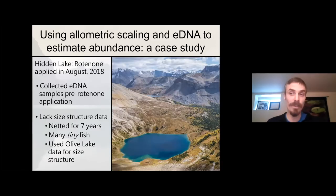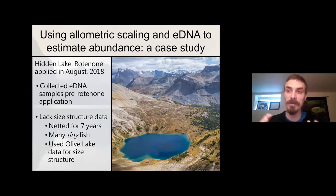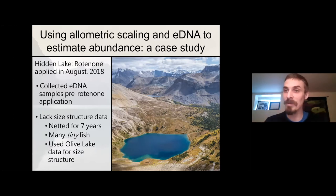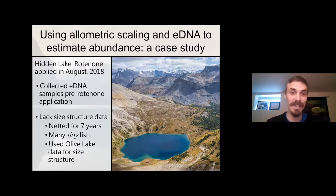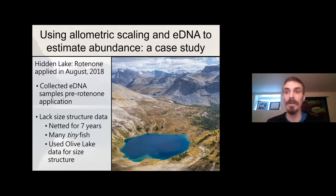We went a little further with our study. We got this nice relationship, but we were wondering whether we might be able to use it to predict abundance in a tenth lake. Hidden Lake is a lake inhabited by invasive brook trout in Banff National Park, in very close proximity to our other study lakes. Parks Canada wanted to get rid of those brook trout because they were invasive, and they applied rotenone to the whole lake — poisoning everything in it in August 2018. Before they did, we went in and collected eDNA samples. We don't have size structure data for this lake, but we know it had been intensively netted for seven years in an eradication attempt.